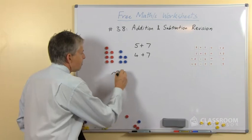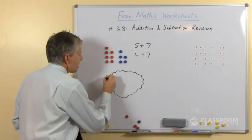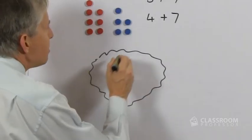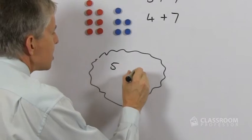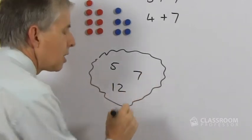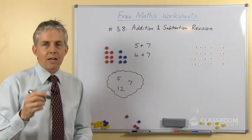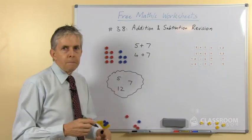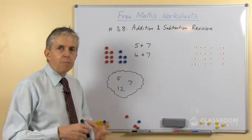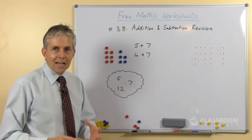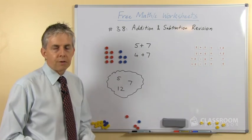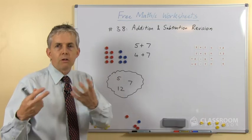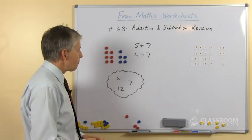That brings up a topic I'd like to mention — the idea of a fact family. If we look at 5 plus 7, we can associate the numbers 5, 7, and their sum, which is 12, as a group. From that we can develop a set of addition and subtraction number facts that all belong together, and so we call that a fact family.